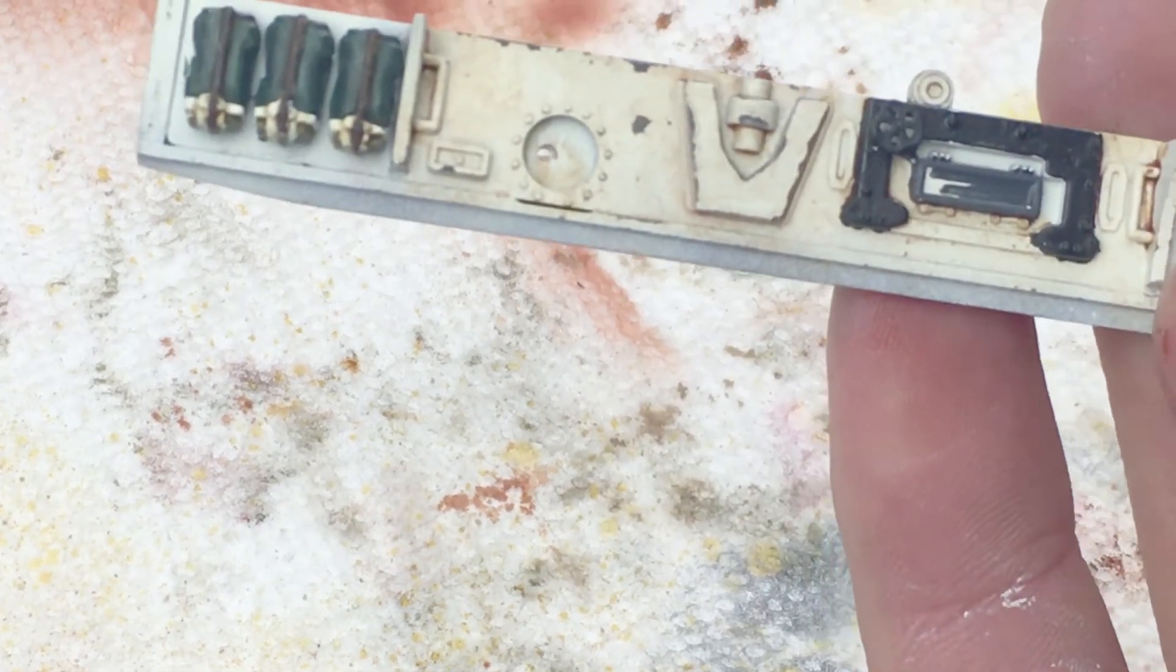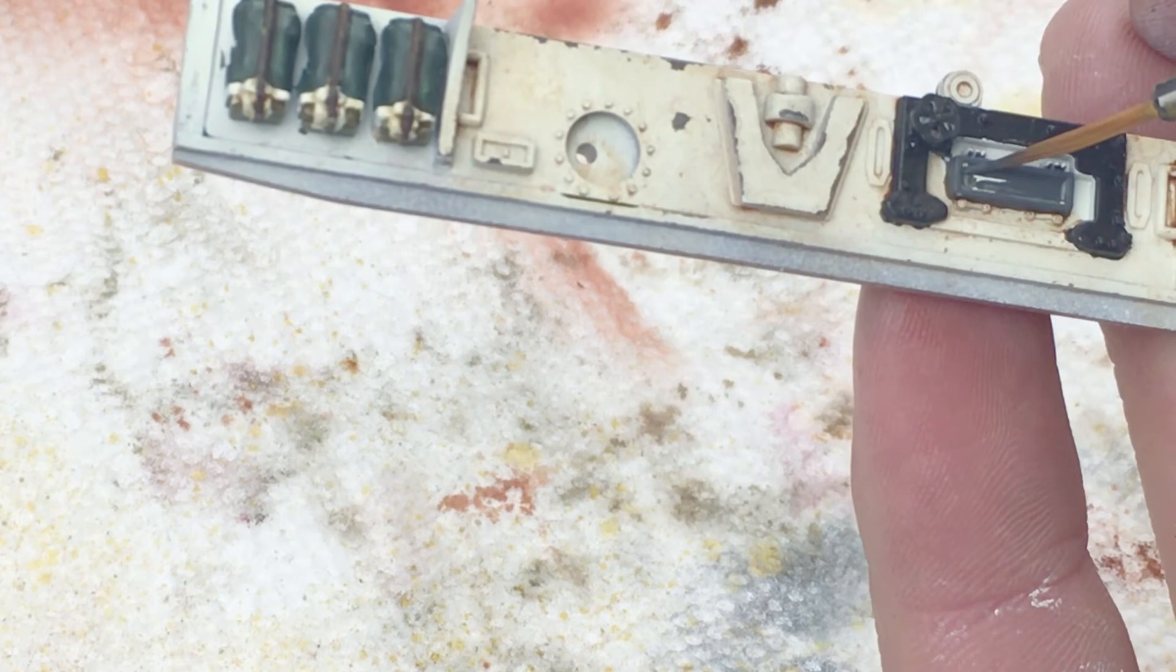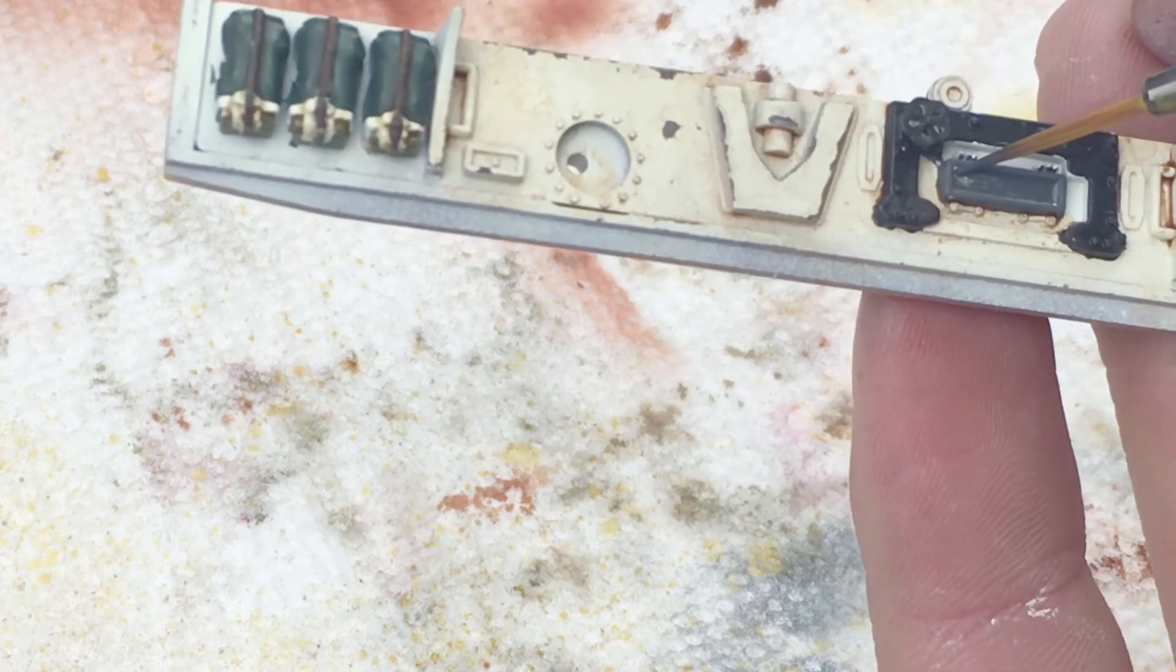For the periscopes I'm going to paint each one with a Vallejo dark sea green as it's just a little bit off grey and I think it adds some good contrast.